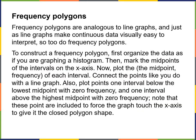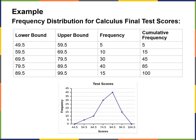The next thing we have are frequency polygons. Frequency polygons are analogous to line graphs, and just as line graphs make continuous data visually easy to interpret, so too do frequency polygons. To construct a frequency polygon, first organize your data as if graphing a histogram. Then mark the midpoints of the intervals on the x-axis, plot the midpoint frequency of each interval, and connect the points like a line graph. Also plot points one interval below the lowest midpoint and one interval above the highest midpoint with zero frequency to force the graph to touch the x-axis and give it the closed polygon shape.